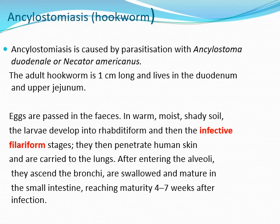نجعل الأول اللي يسمى الأنكيلوستوميasis أو the hookworm disease. الأنكيلوستوميasis is caused by parasitization with hookworms - يسمى Ancylostoma duodenale or Necator americanus. The adult hookworm is about one centimeter long and lives in the duodenum and upper jejunum.